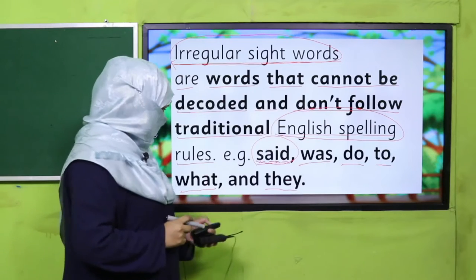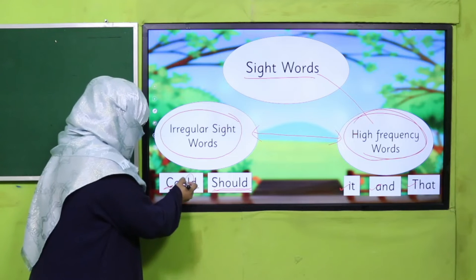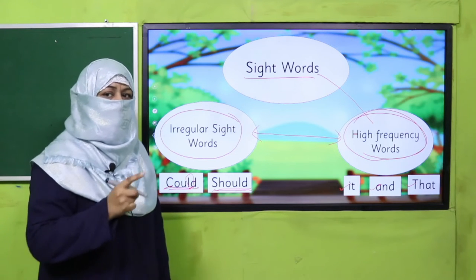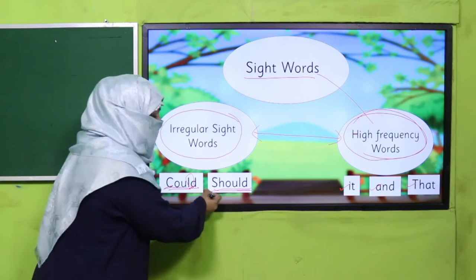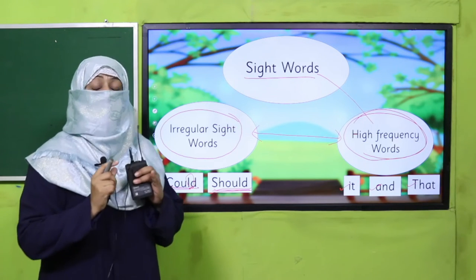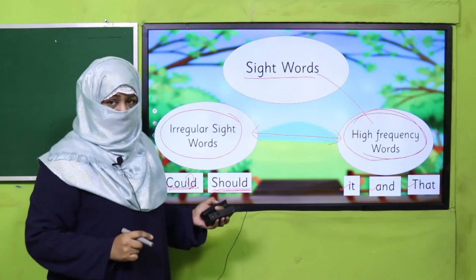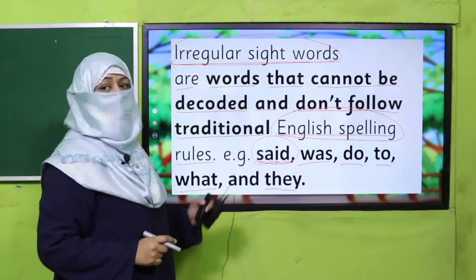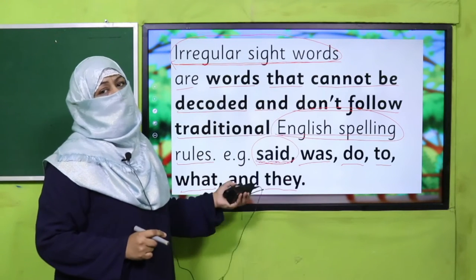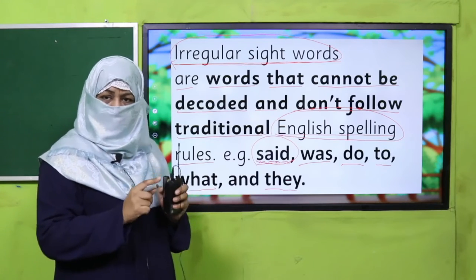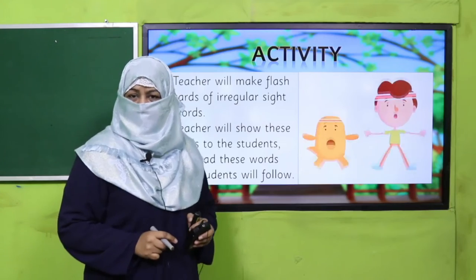As I just showed you — 'could' and 'should' — you see there is an 'l' in them but I'm not saying that sound when I say this word. It's 'could,' 'should.' The pronunciation pattern for these words is different, that's why they are called irregular sight words and we need to learn how to pronounce them. Are you clear with the concept?